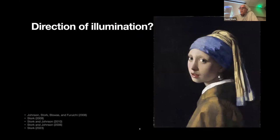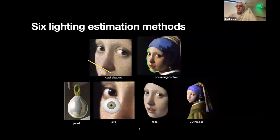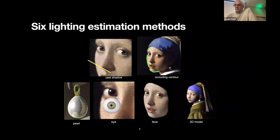If we ask the simplest technical question about the illumination in this painting, it would be: what's the direction of illumination? And if two art scholars disagreed, how would we adjudicate? How would we tell who is right? Let me show you six techniques from computer vision that answer this question absolutely clearly, and then explain how these results enrich our understanding of this painting and can be used elsewhere in the study of art.